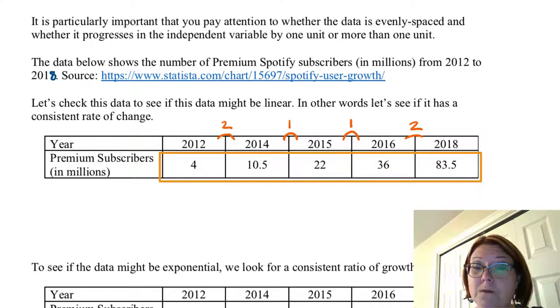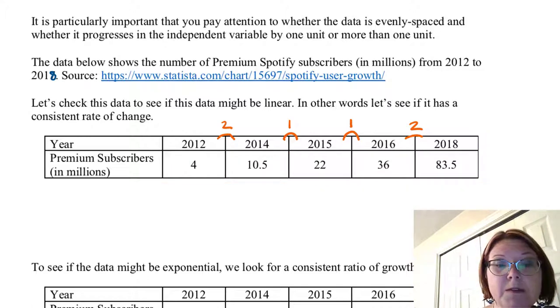The premium subscribers in millions: in 2012, it was 4 million; in 2014, 10.5 million; in 2015, 22 million; in 2016, 36 million; and in 2018, 83.5 million. The premium subscribers is the dependent variable and the year is the independent variable.